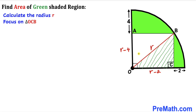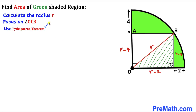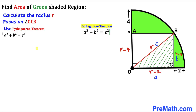Now we know that OABC is a rectangle, so this side has got to be equal to this side. If one side is R minus 4, then the other has to be R minus 4 as well. Now we know that OCB is a right triangle, so we are going to use the Pythagorean theorem: A squared plus B squared equals C squared. We call the hypotenuse side C, and the two legs sides A and B. In our case A is R minus 2, B is R minus 4, and C is R.